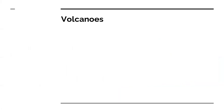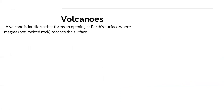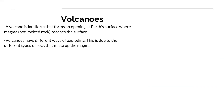So volcanoes. A volcano is a landform that forms an opening at Earth's surface where magma — which remember is hot melted rock — reaches the surface. Volcanoes have very different ways of exploding and this is because of the different types of rock that make up magma. Sometimes pressure will build up so that the gases in magma explode.